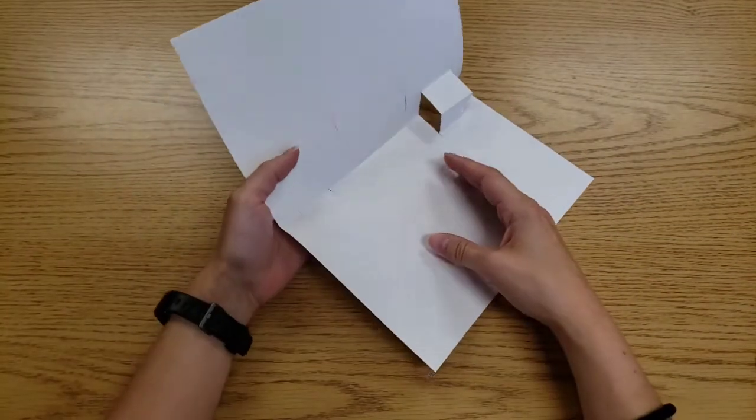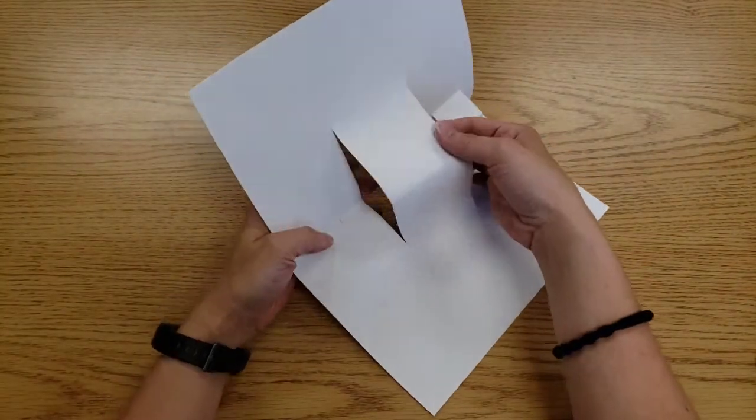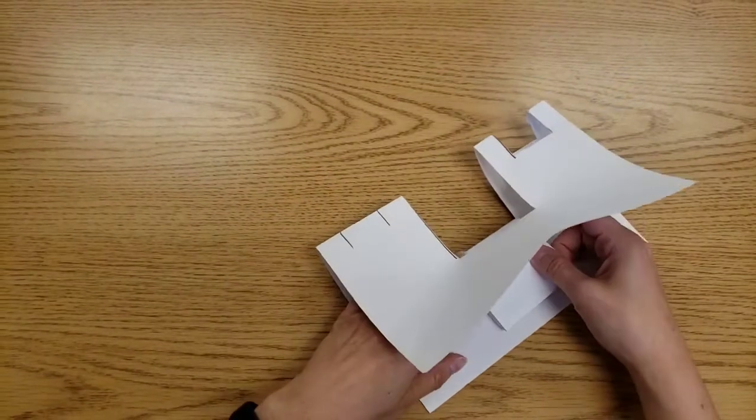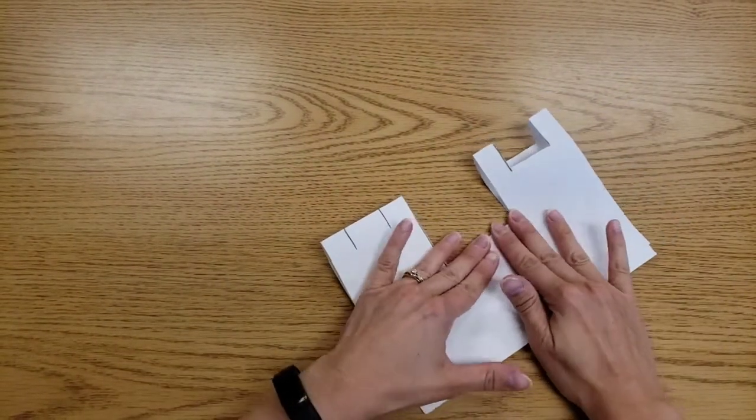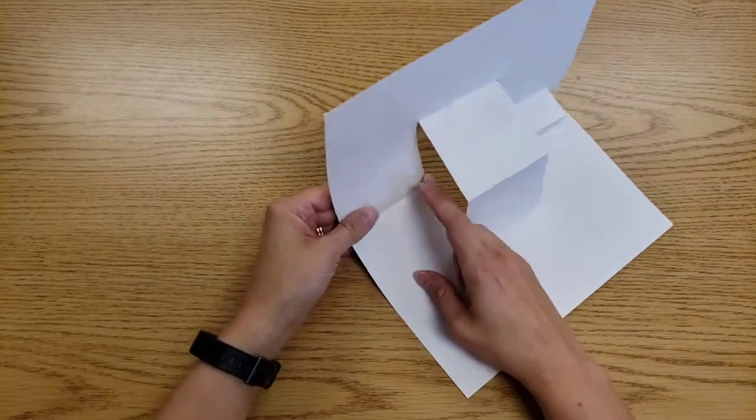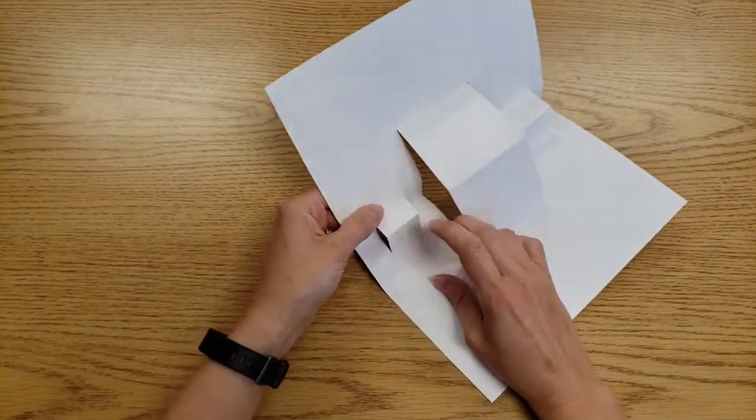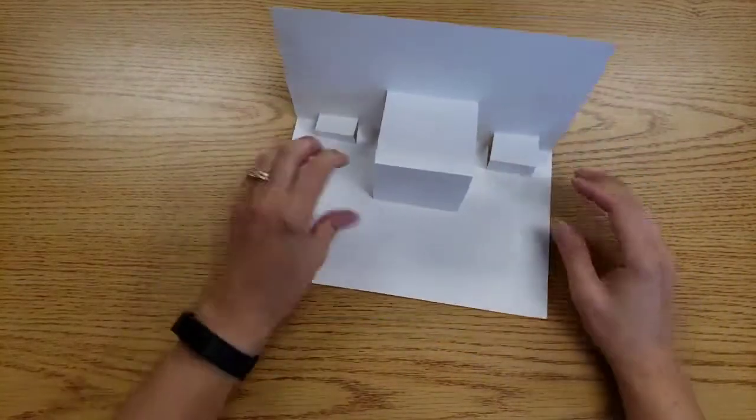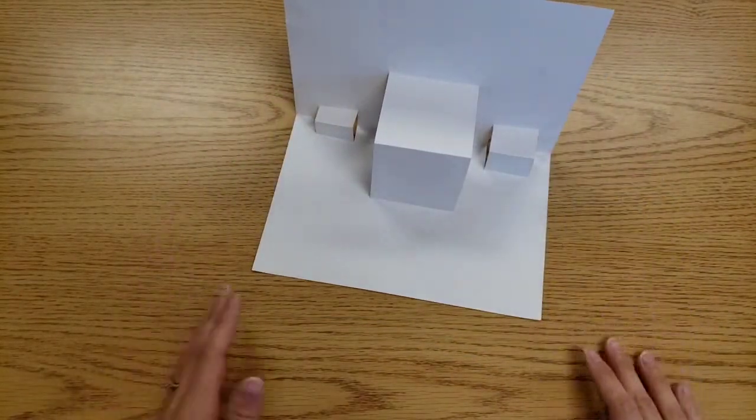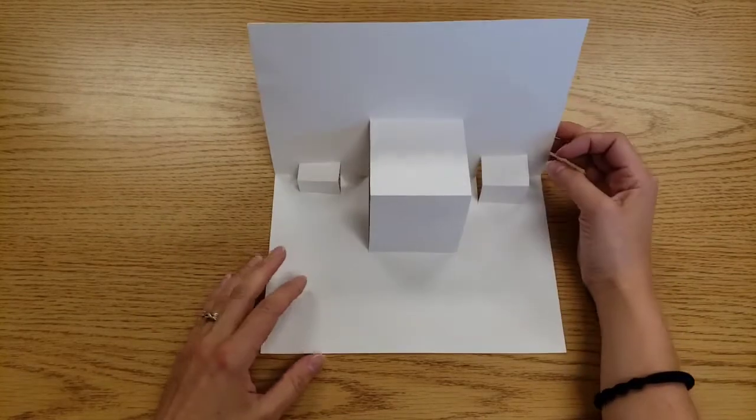Same thing with the next section. Pop it up. Bring it forward. And crease. Next one. Pop it up. Bring it forward. And crease. So now we have three boxes that are sticking up.